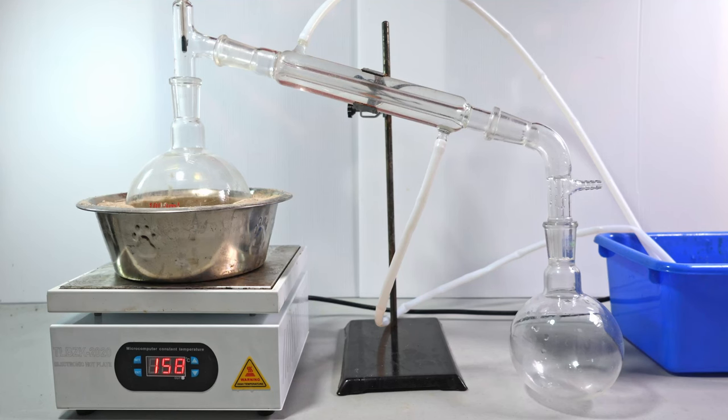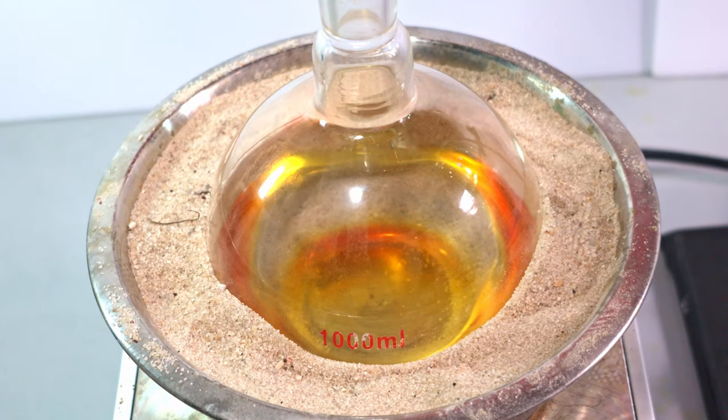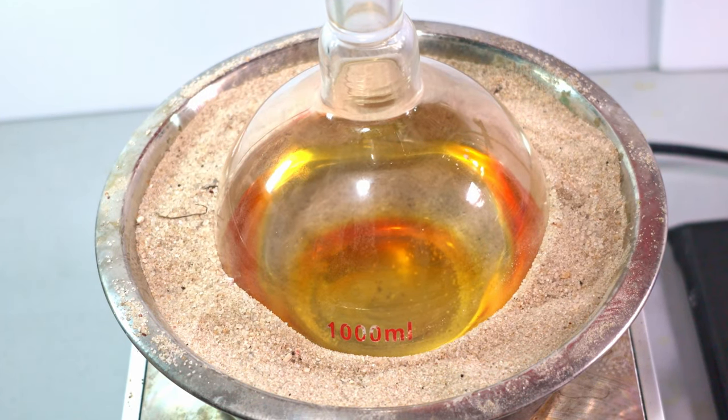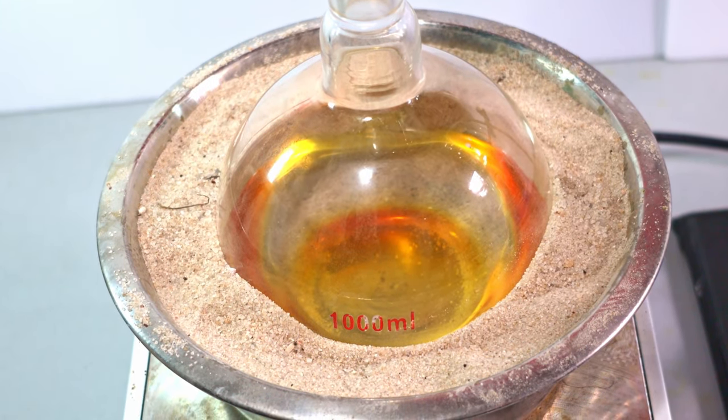With our distillation system set up, the only thing I need to do now is wait for ether to be produced. I have it set on 160°C and hopefully ether will come through soon. In the reaction flask, you can clearly see that our reaction is starting to happen with the golden amber color our solution has taken on.